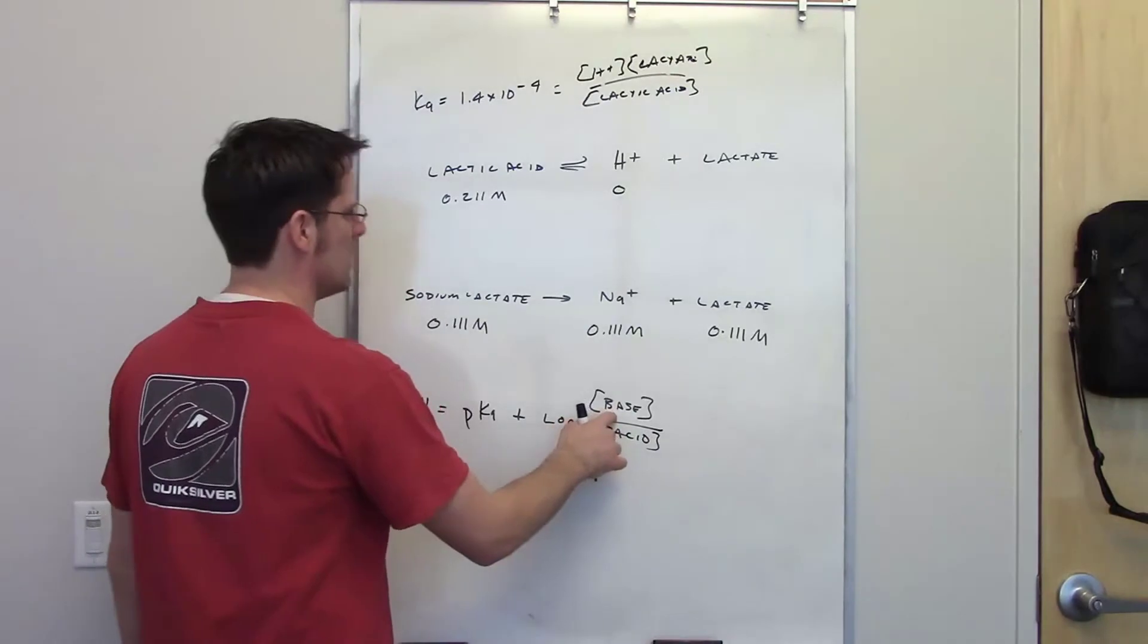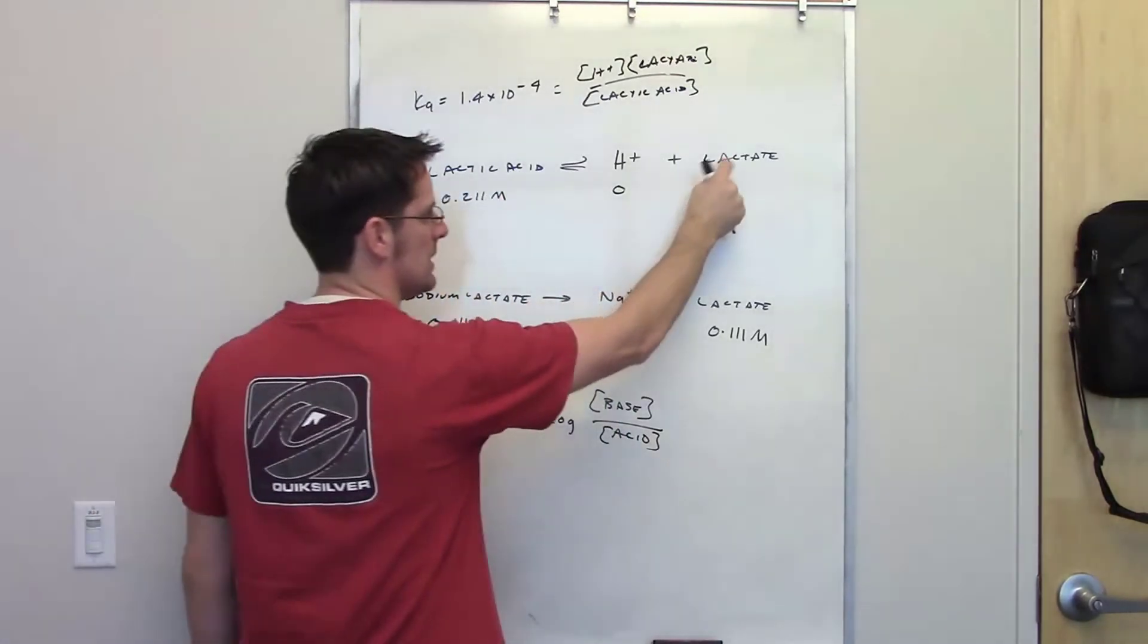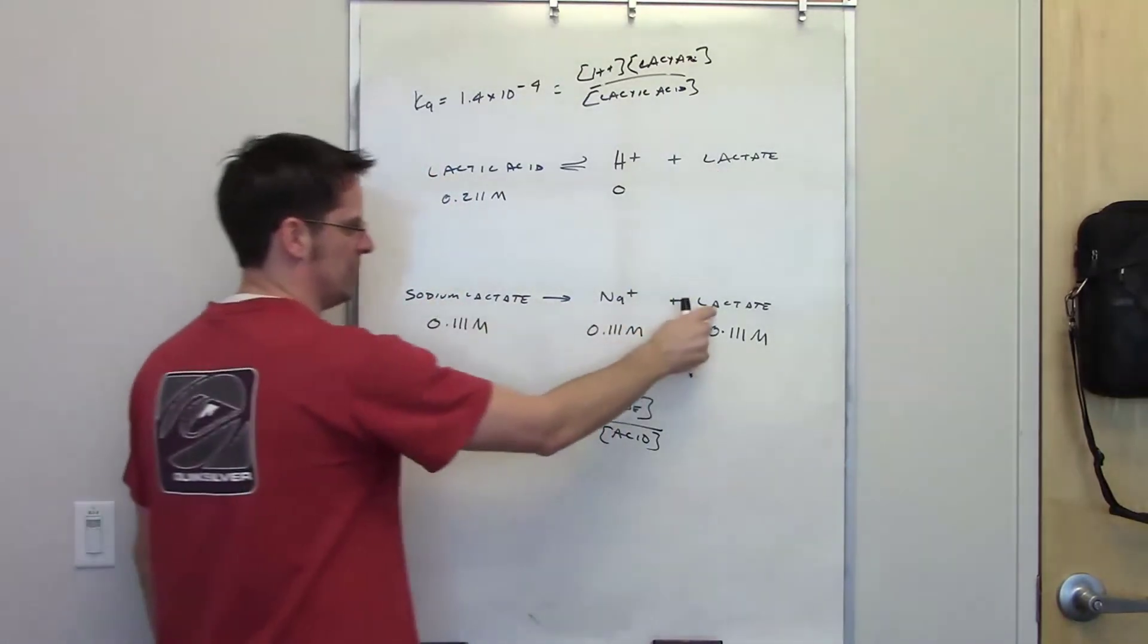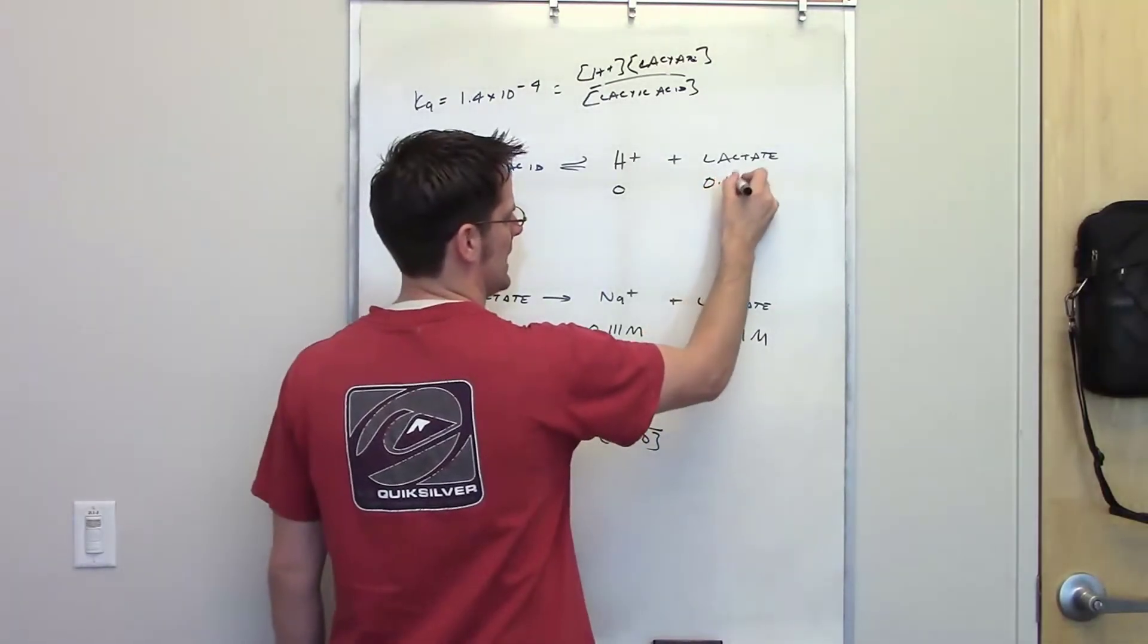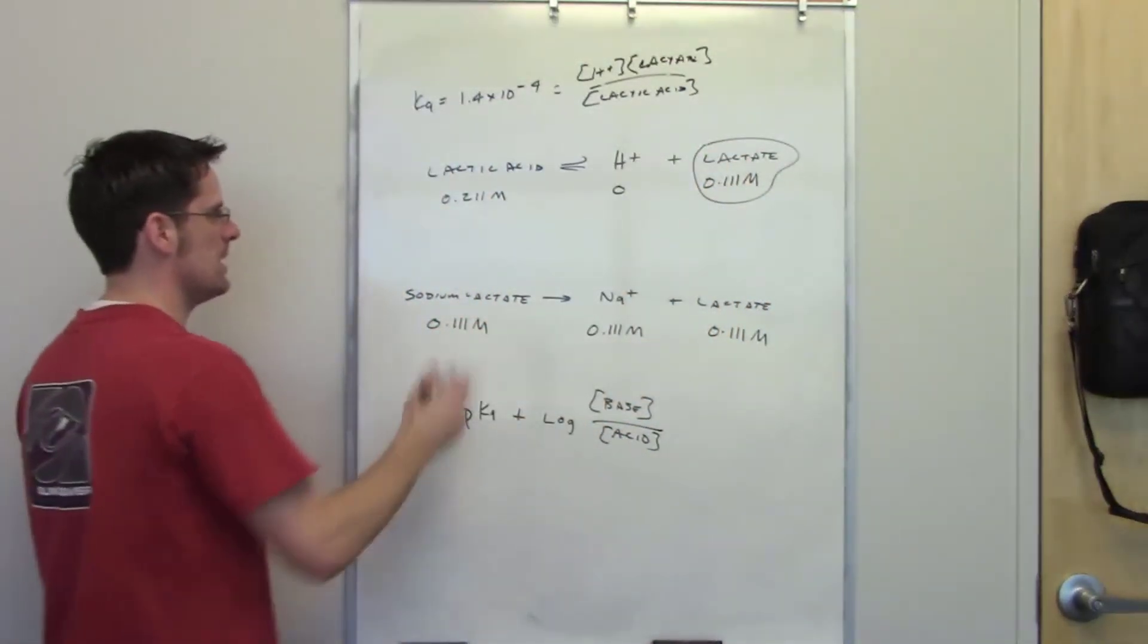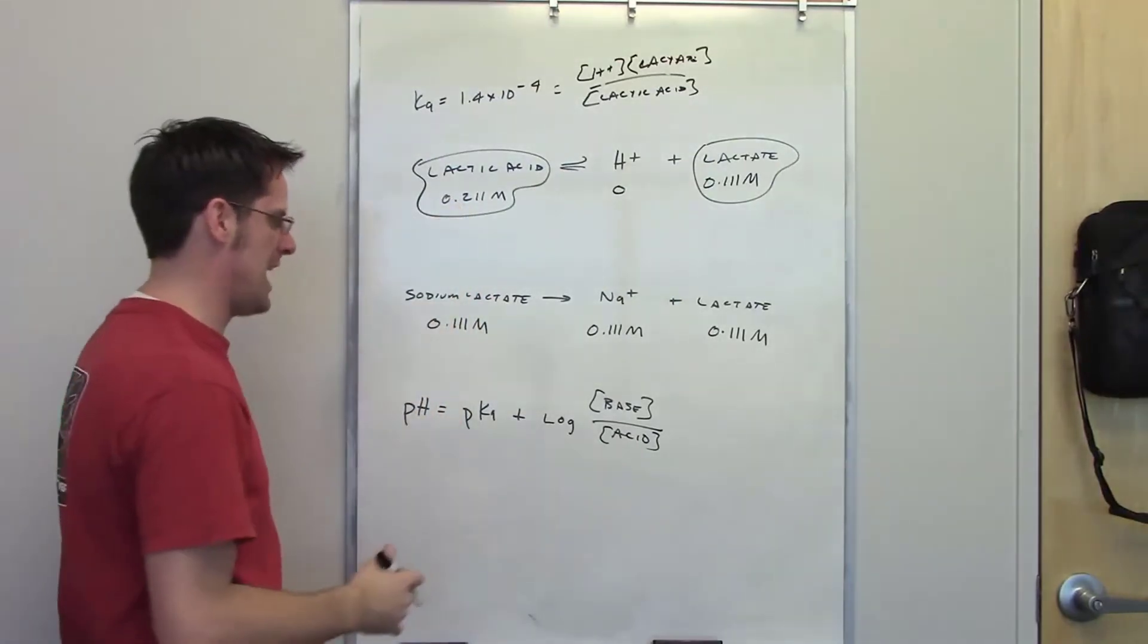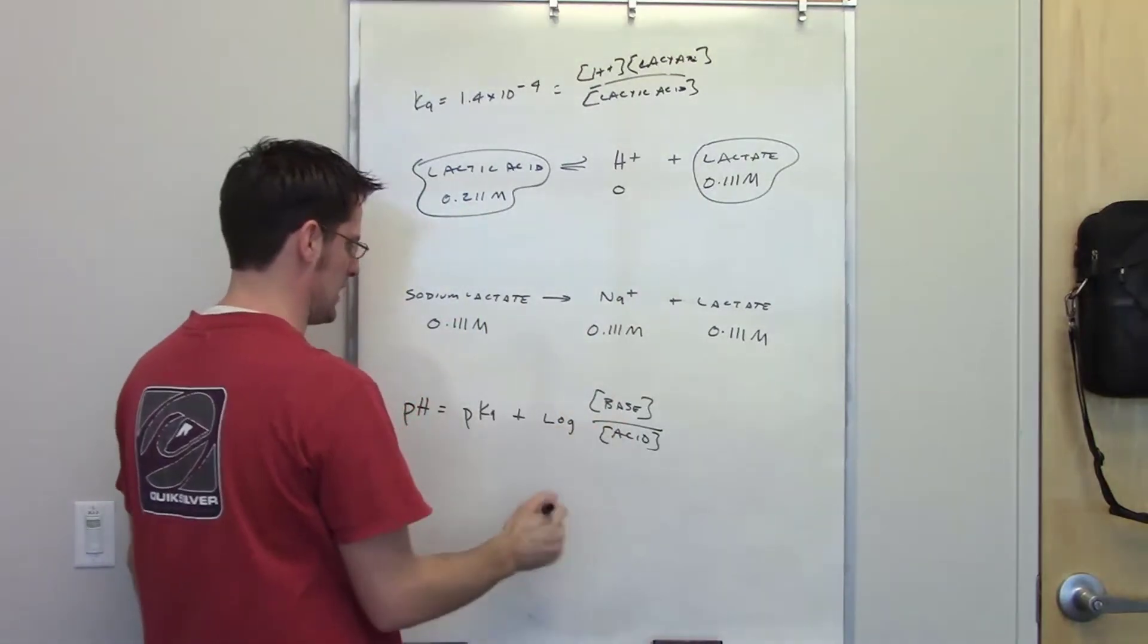Let me explain what this stuff means. First of all, what is the conjugate base of our acid? Here's lactic acid. Its conjugate base is lactate. Now because I've added this source of lactate, I have common ion. I've got 0.11 molar lactate at initiation. So this is the conjugate base, and that is its concentration at initiation. This is the acid itself, and that is its concentration at initiation.